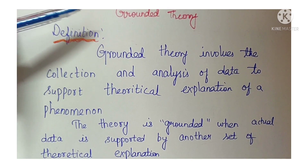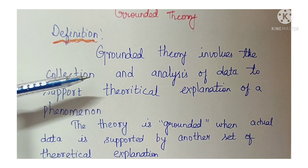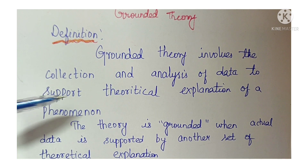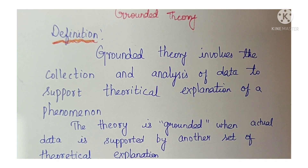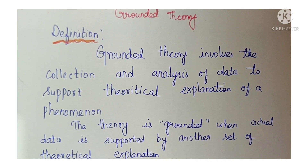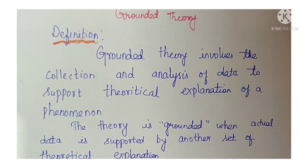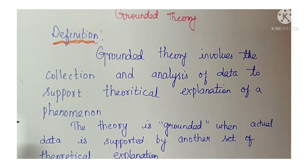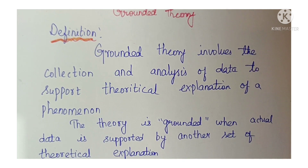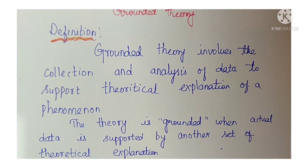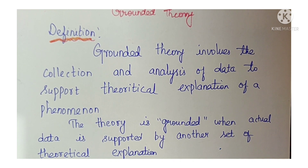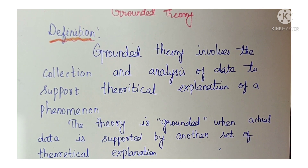The last type is grounded theory, which is very important. Grounded theory design involves the collection and analysis of data to support a theoretical explanation of a phenomenon. Some practical occurrence leads to identifying what theory underlies it. Grounded theory adds to the body of theoretical knowledge. The theory is considered grounded when actual collected data is supported by another set of theoretical explanations.